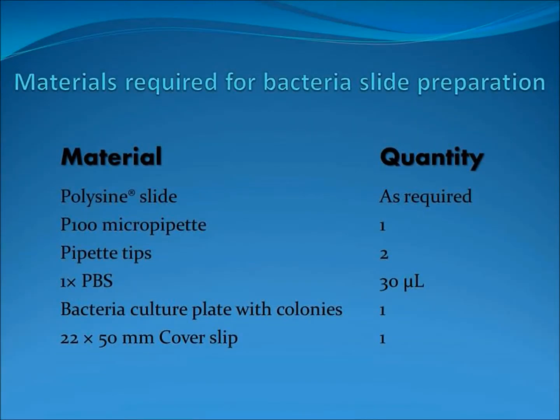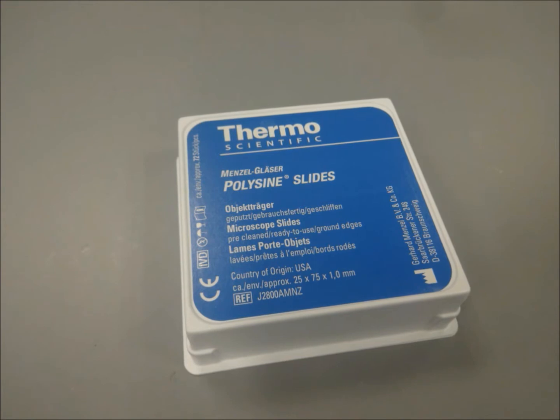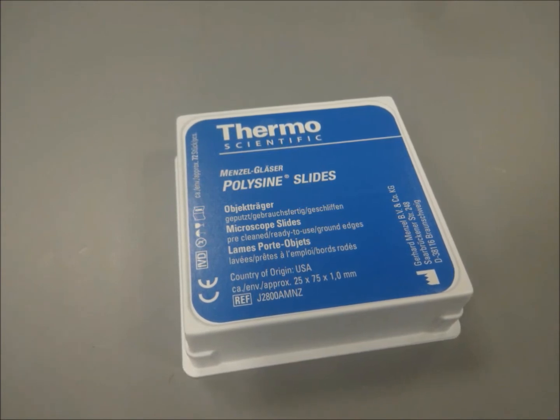This video will demonstrate the preparation of bacteria cells on a microscope slide for viewing. Glass slides coated with poly-L lysine will be used. Poly-L lysine is a positively charged amino acid polymer.